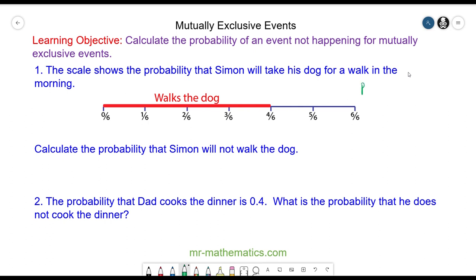The probability of Simon walking the dog plus the probability of not walking the dog will equal one. He will either walk the dog or he will not, and that is certain.